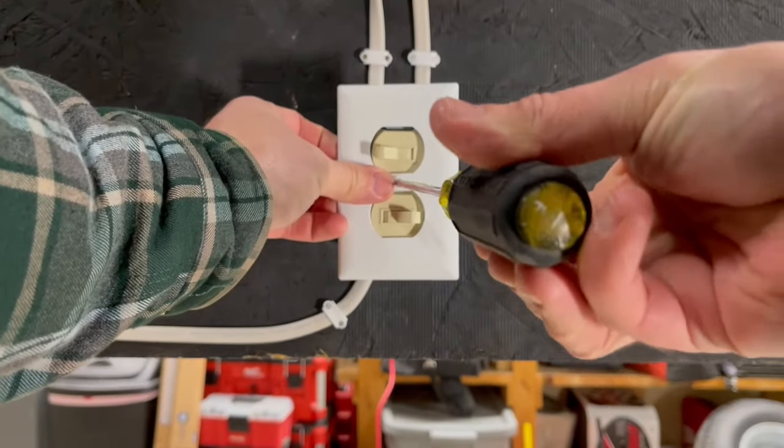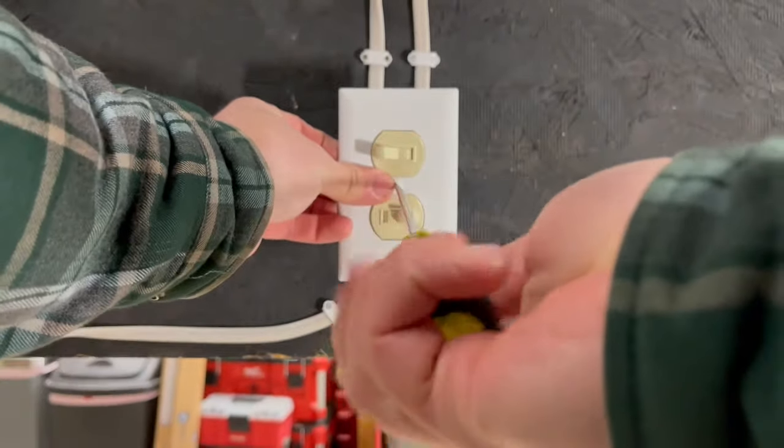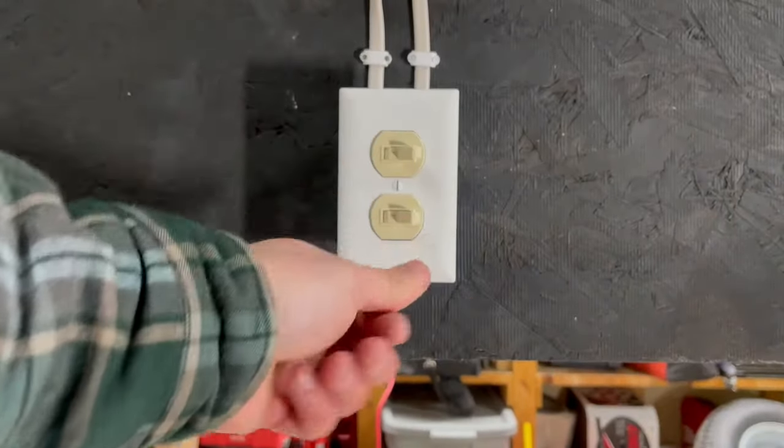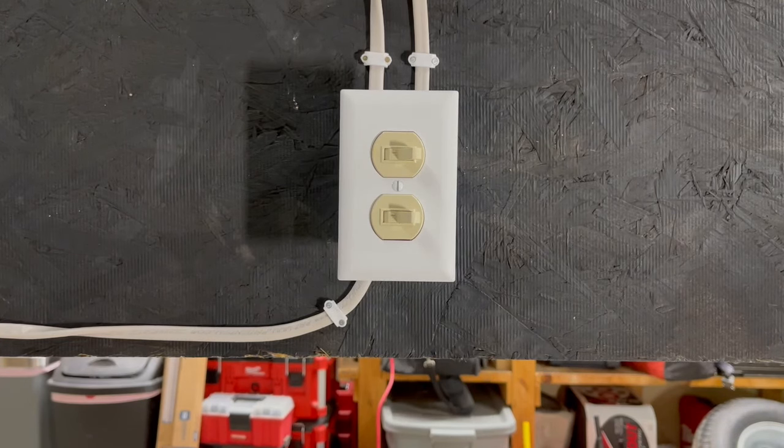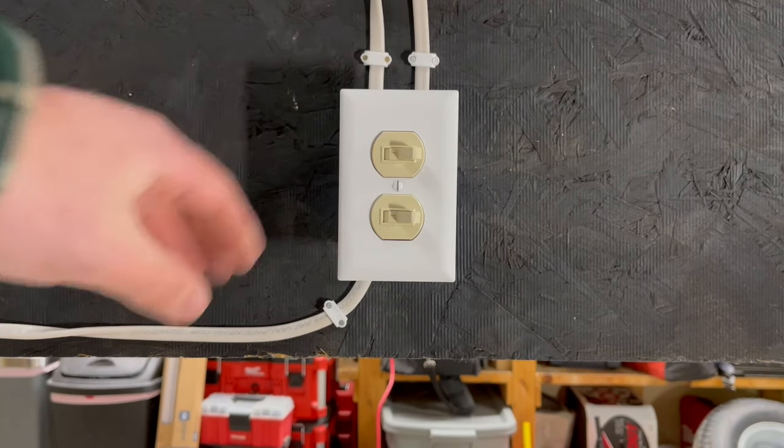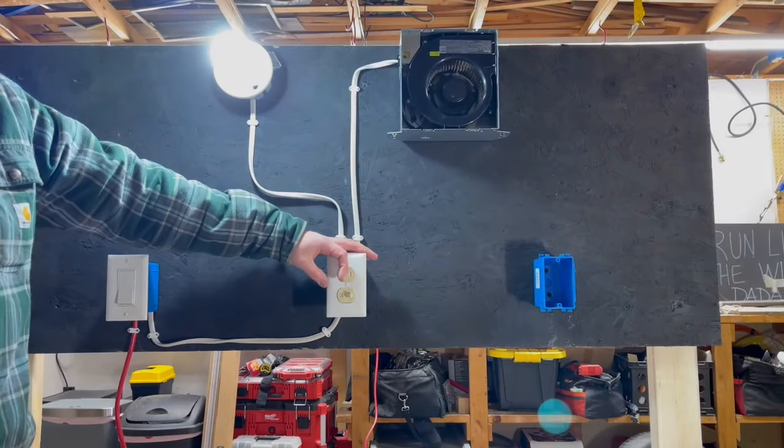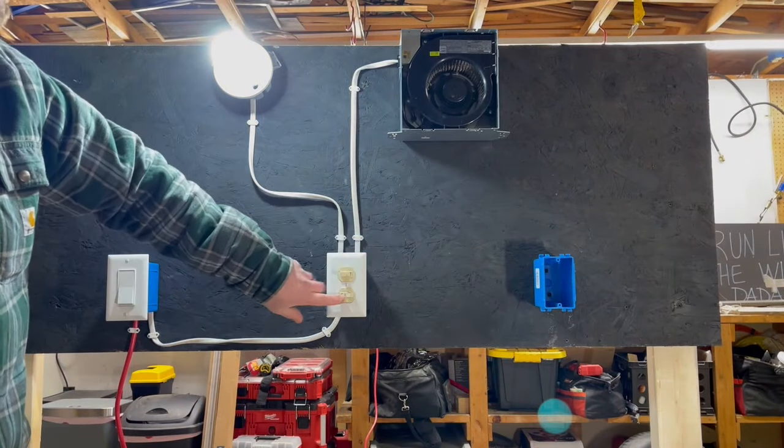Now we can put our plate on. And yes, they're different colors, just for demonstration. Now let's turn them both off, we'll go over to our breaker, turn it on. Now let's try it out, our top switch should be the light, and bottom switch should be our fan.